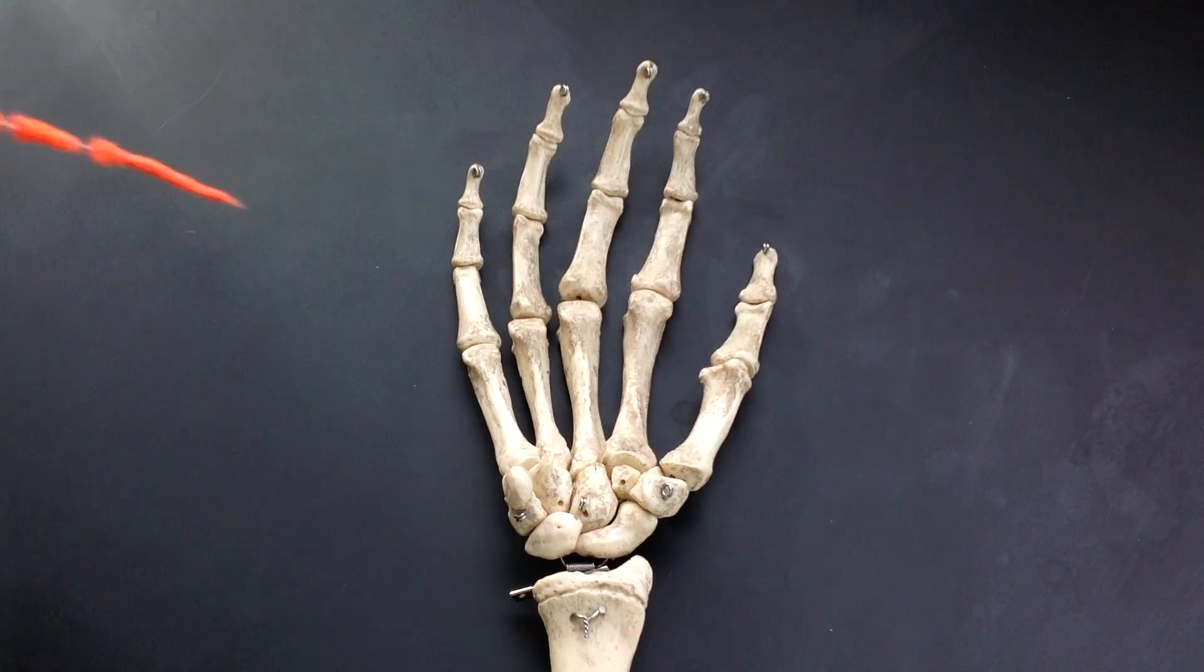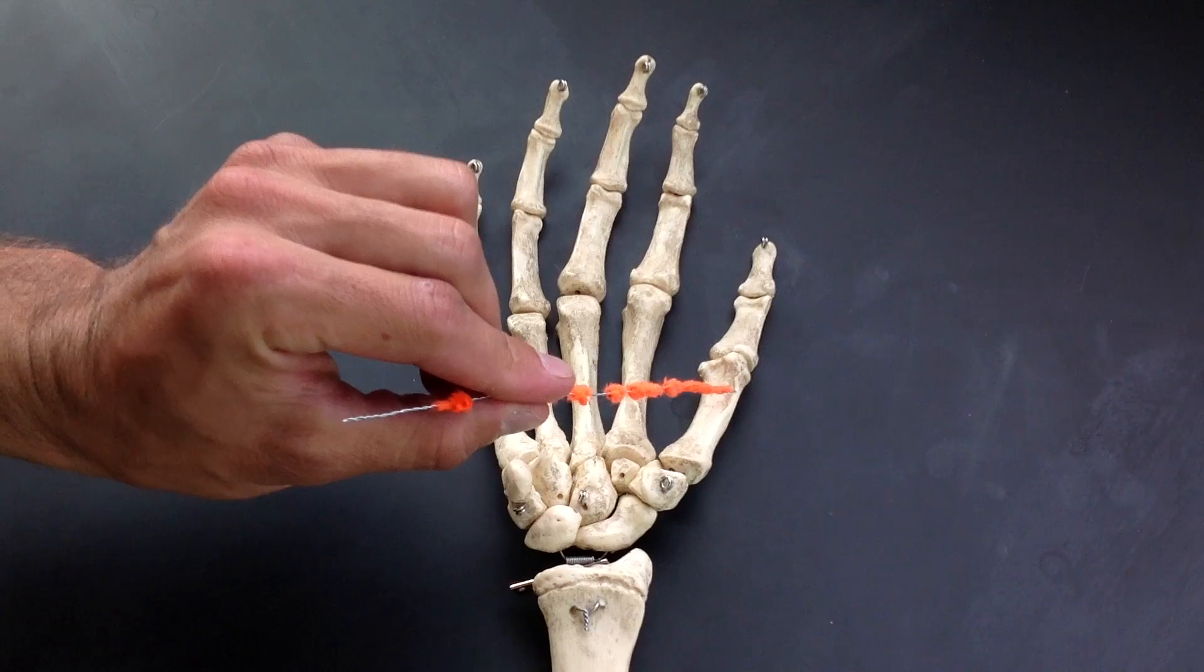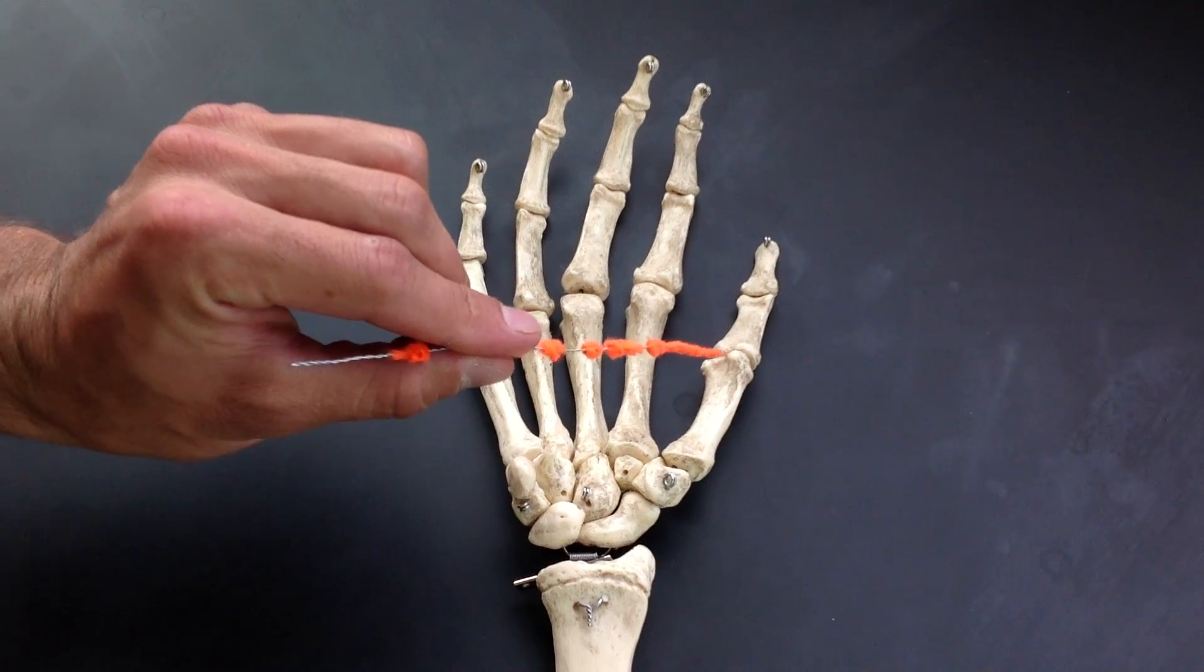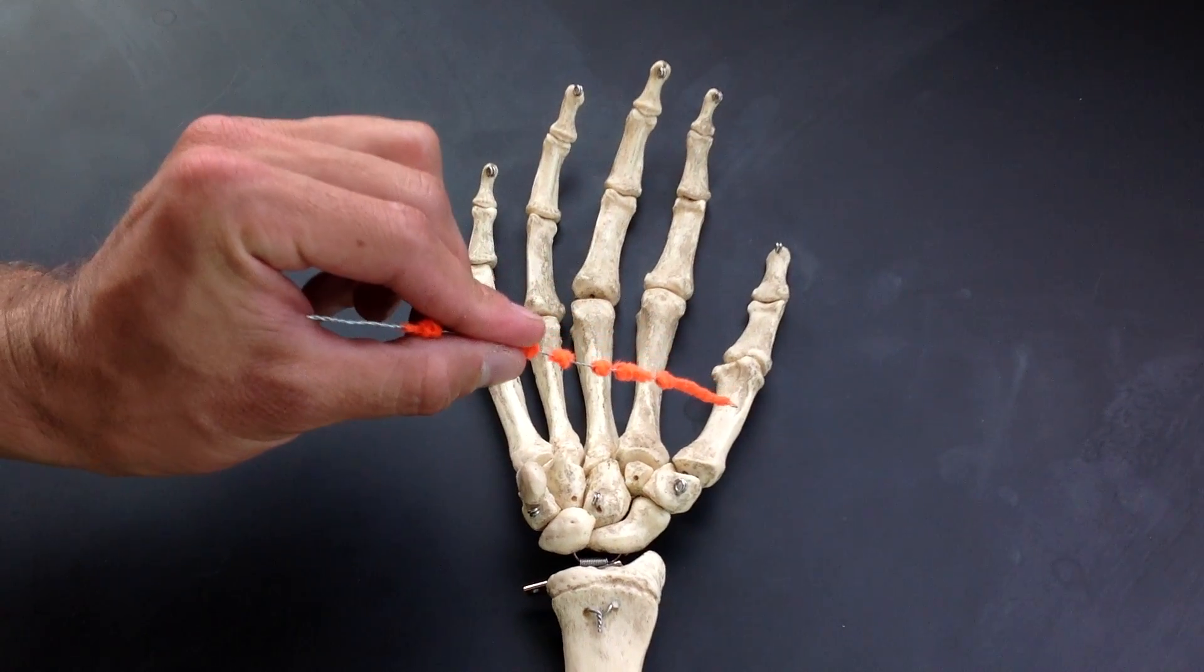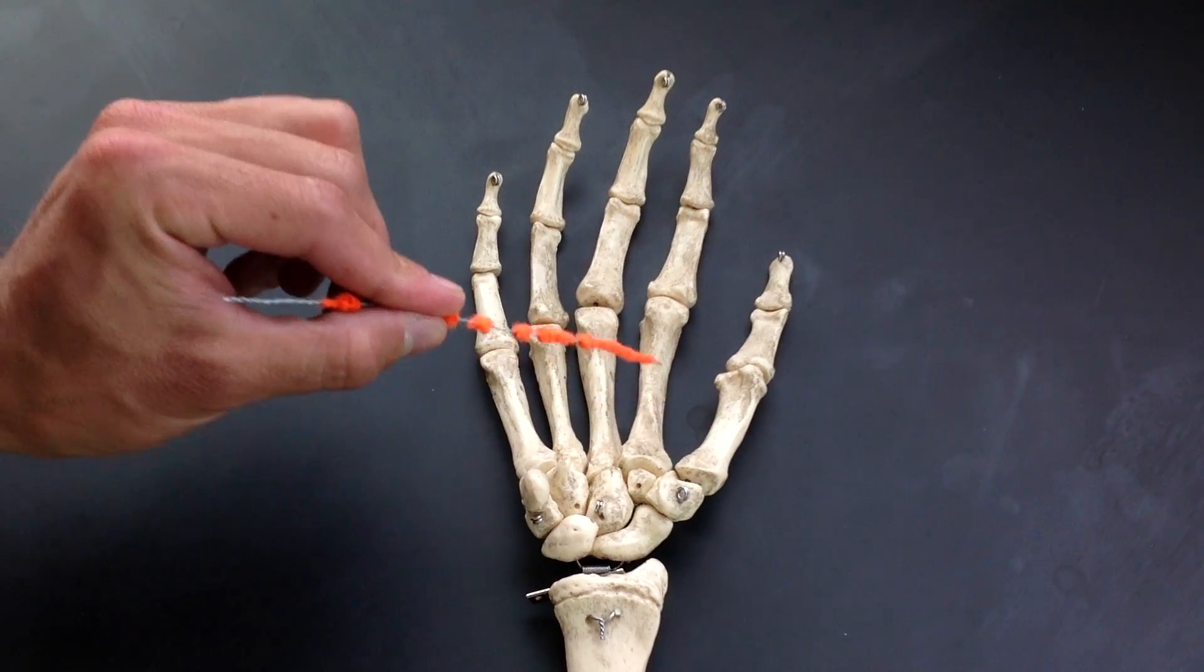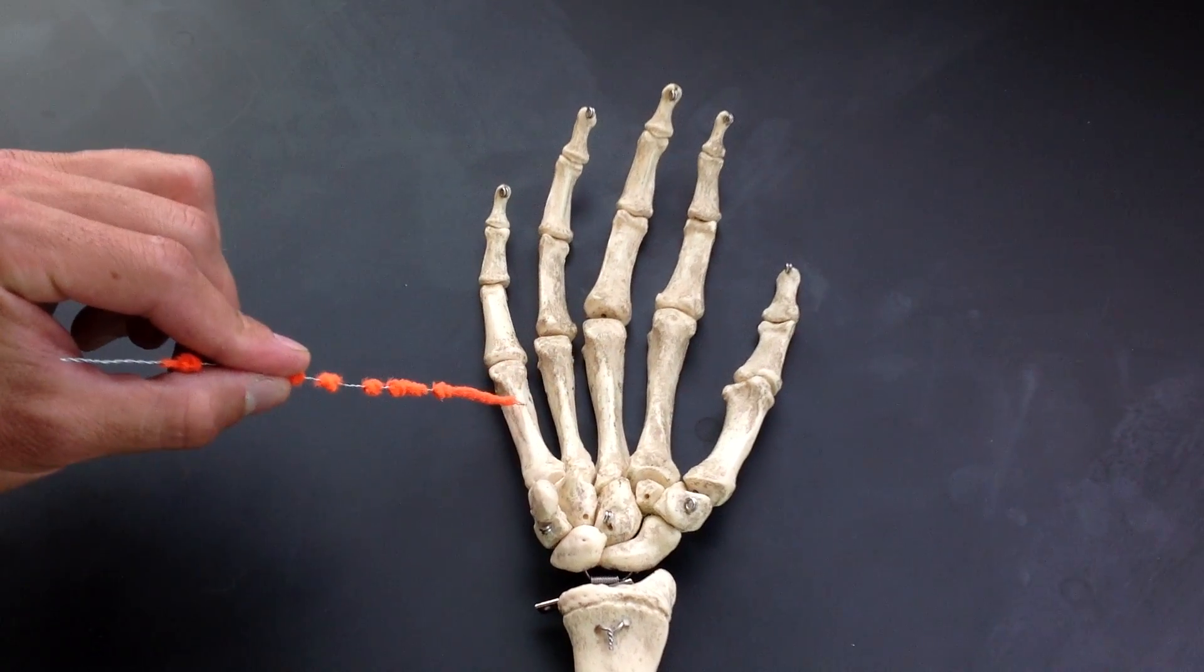I'm going to start with the first digit, which is also the pollex, or the thumb. On the first digit, this is your first metacarpal, second metacarpal, third, and so on to your pinky.